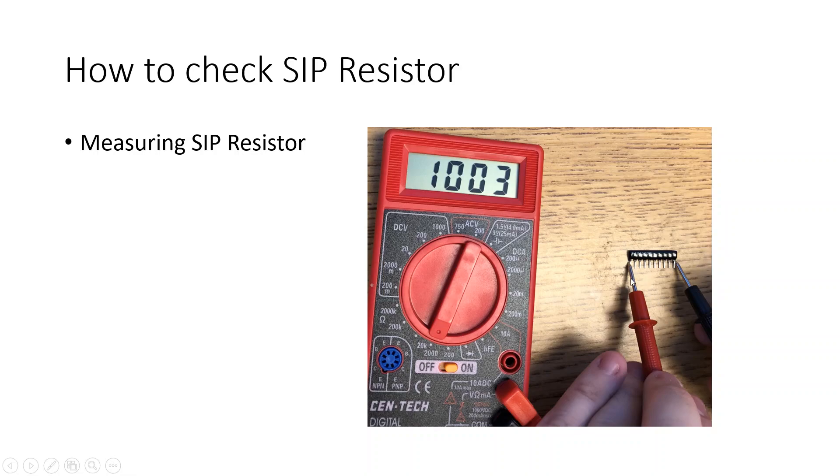Then we're going to take each lead and connect it to the opposite end. At this time, if you see a value appear, that usually means that we have a bussed resistor. If you don't, like if you just see a one, that usually says that we have an isolated. That's a simple way we can check to verify which resistor layout we have as well as measurement.